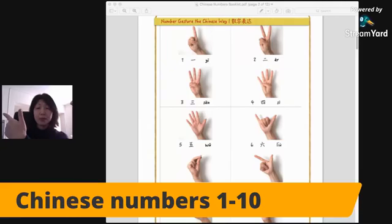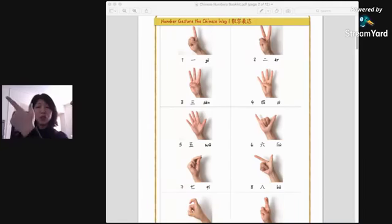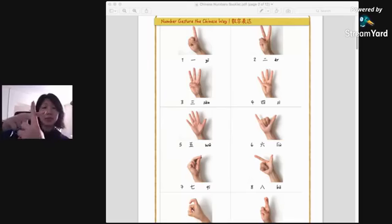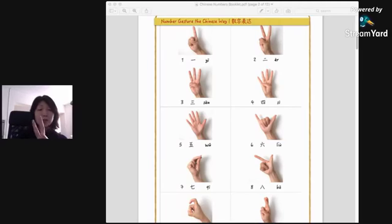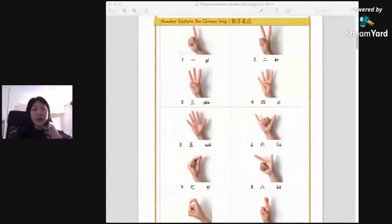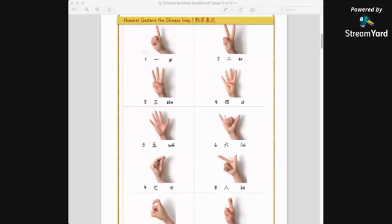Nine, jiǔ, in Chinese you can do like this - it's like a hook. Ten, shí, we use one finger crossing like this, two fingers cross each other. You can also use two hands to make a cross because it looks like shí. So for ten there are two ways: either you can do this or you can do this with two hands.